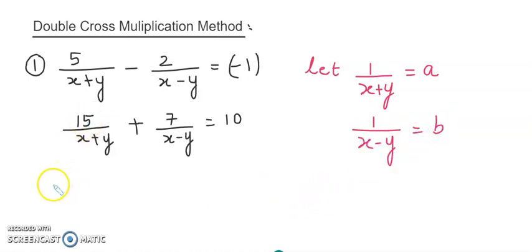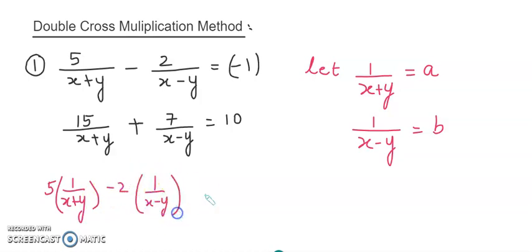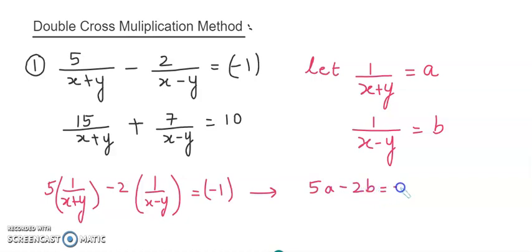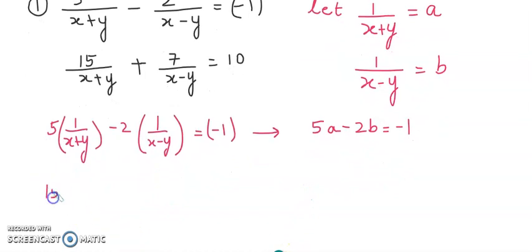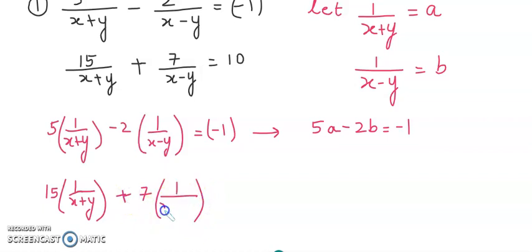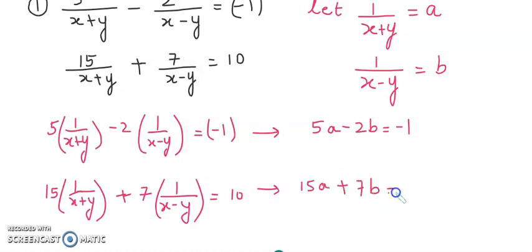So what will happen with the equations? The first equation will change as 5 times 1 upon x plus y minus 2 times 1 upon x minus y equals to minus 1. So that will change as 5a minus 2b equals to minus 1. And the next equation will change as 15 times 1 upon x plus y plus 7 times 1 upon x minus y equals to 10. So that will change as 15a plus 7b equals to 10.